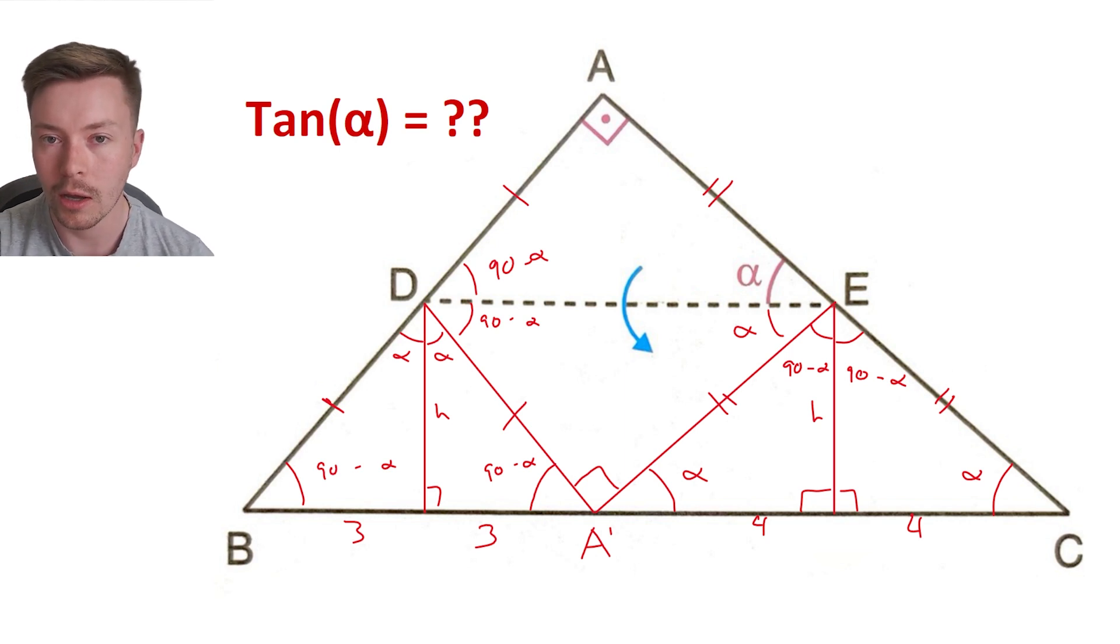And then what I'm going to do is I am going to start working out, I've got basically two different numbers for H, or I can basically work out tan alpha in terms of H two different ways, using the three and using the four.